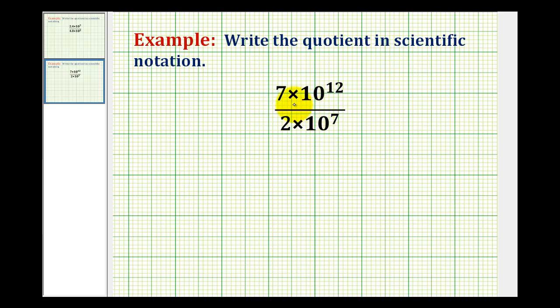We want to divide these two numbers written in scientific notation without the use of a calculator. To do this we can think of dividing this up into two different fractions connected by multiplication.